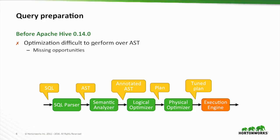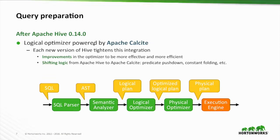Let's do a query optimizer overview at 10,000 feet. Pre-0.14 we had an architecture like this: a SQL parser from which we got an AST, we annotated that AST, generated a plan, applied some optimizer rules, and then executed it. This wasn't very conducive because the tree representation — part AST and part operator tree — didn't allow you to make a good assessment or glean semantic information for further optimizations. Starting at 0.14 we adopted Apache Calcite. We changed the pipeline: we now generate a logical plan first, which is the operator tree in terms of Calcite operators.